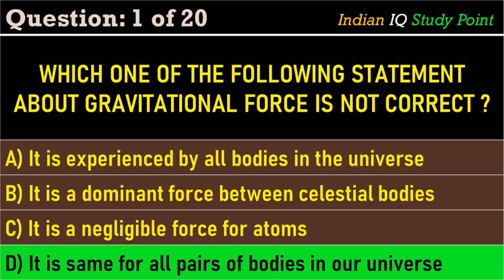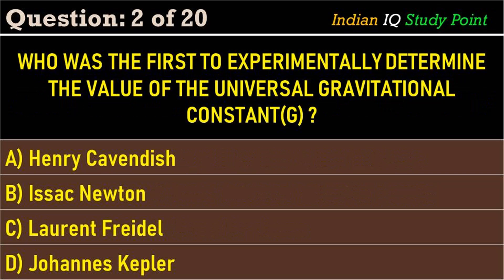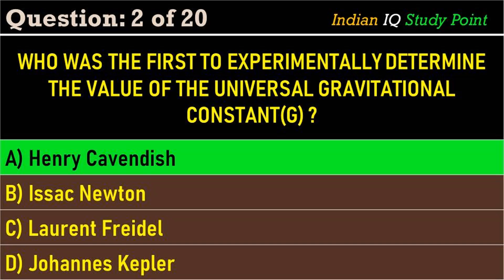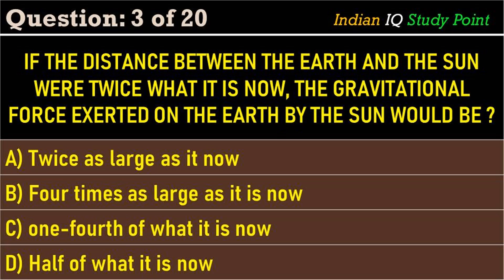The correct answer is option D: it is the same for all pairs of bodies in our universe. Coming to the next question: who was the first person to experimentally determine the value of the universal gravitational constant? Option A: Henry Cavendish. Option B: Isaac Newton. Option C: Laurent Friedel. Option D: Johannes Kepler. The correct answer is option A: Henry Cavendish.